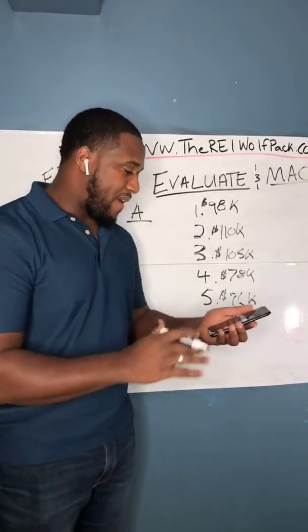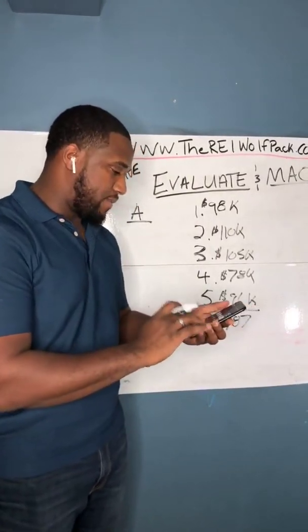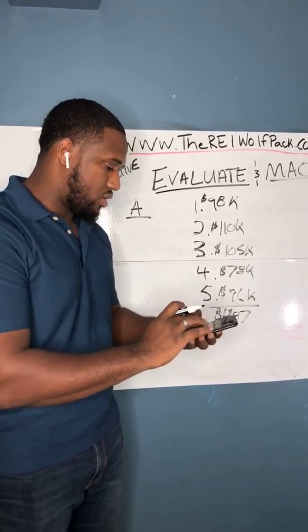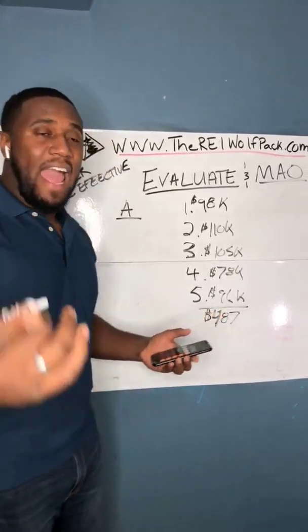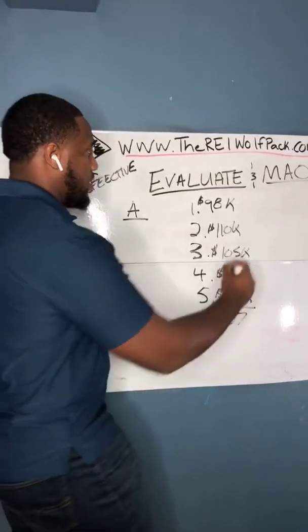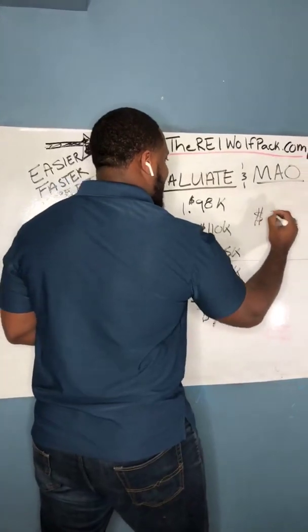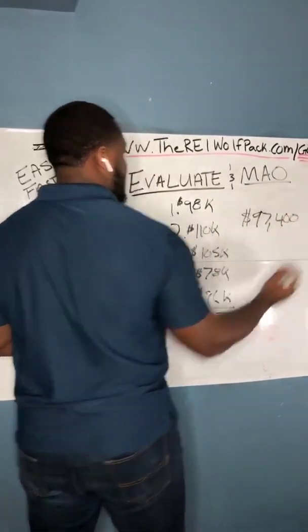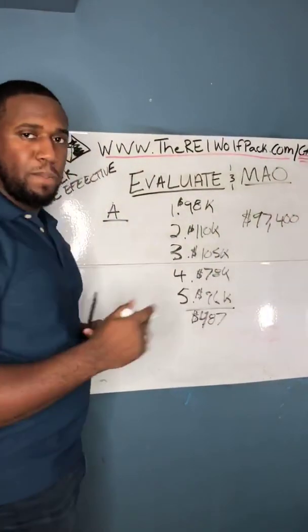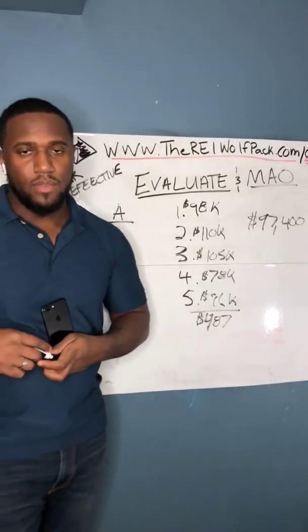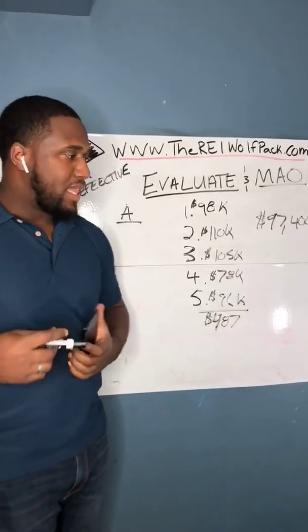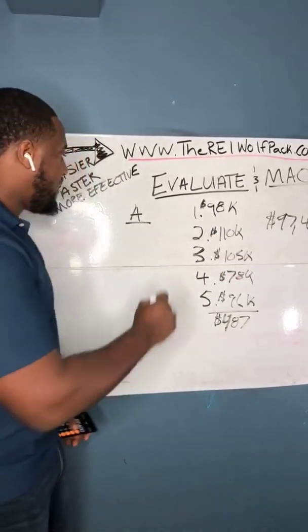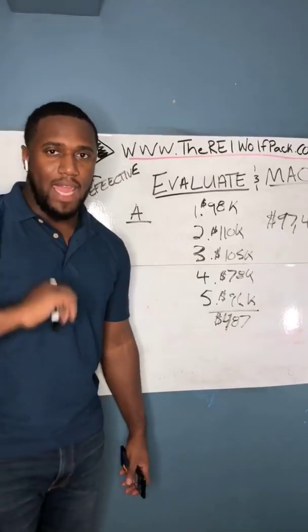Now you're going to divide that by five. So my average is $97,400. That's probably my ARV — the number I'm going to use to evaluate Property A.